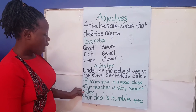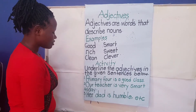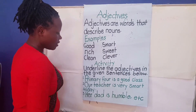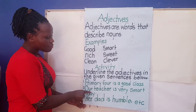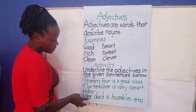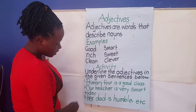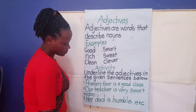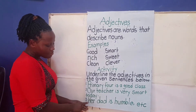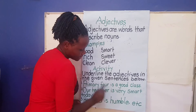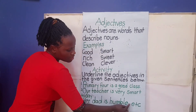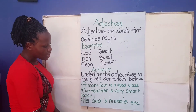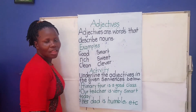Let us see number two: Our teacher is very smart today. At home, you will underline the adjective in sentence number two. Number three: Her dad is humble. You're going to underline the adjective in this sentence. You can also write up to number five sentences of your choice and underline the adjective. Thank you so much.